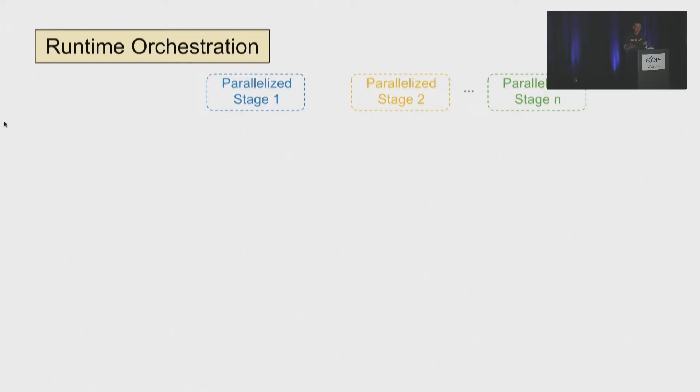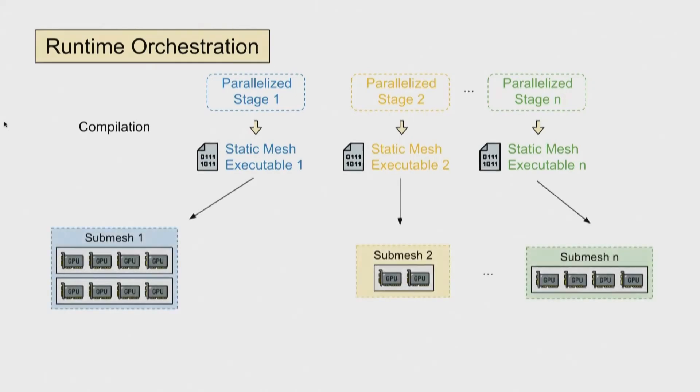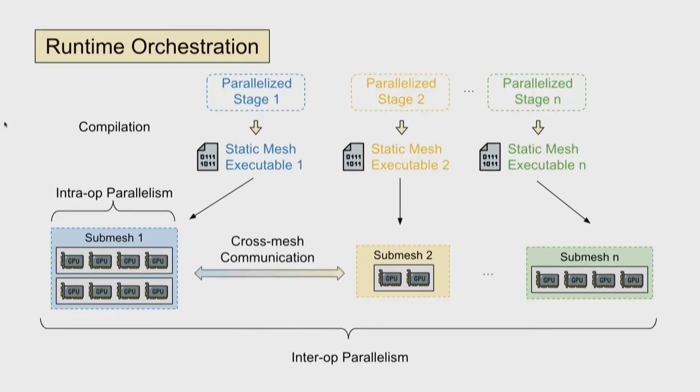So with the inter and intra-operator passes, we can transform the original single node computation graph to these parallelized pipeline stages. With no existing framework supporting executing such a complex parallel plan, we also design a runtime to efficiently execute the parallel plan. Specifically, we compile each stage to an executable with static instruction. These executables are then sent to the corresponding submeshes. The Alpa runtime orchestrates intra-operator parallelism within a submesh and inter-operator parallelism across multiple device meshes. We also implement various optimization for cross-node communication in the runtime with more details in the paper.